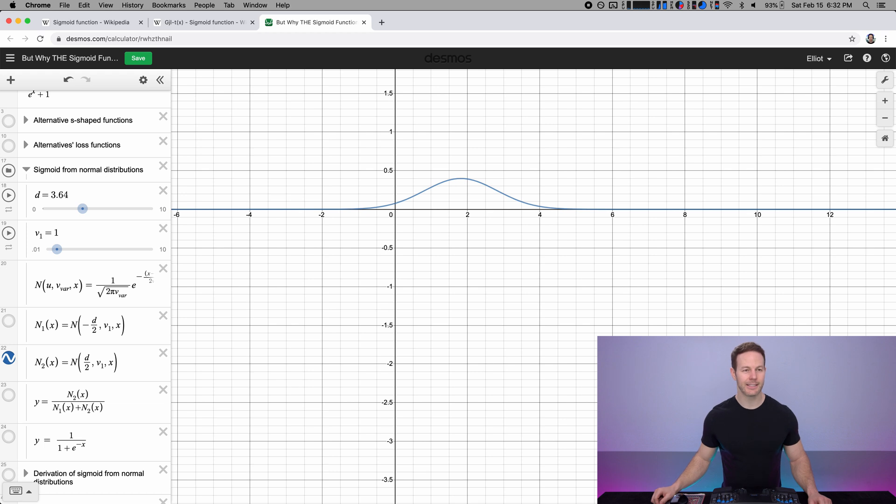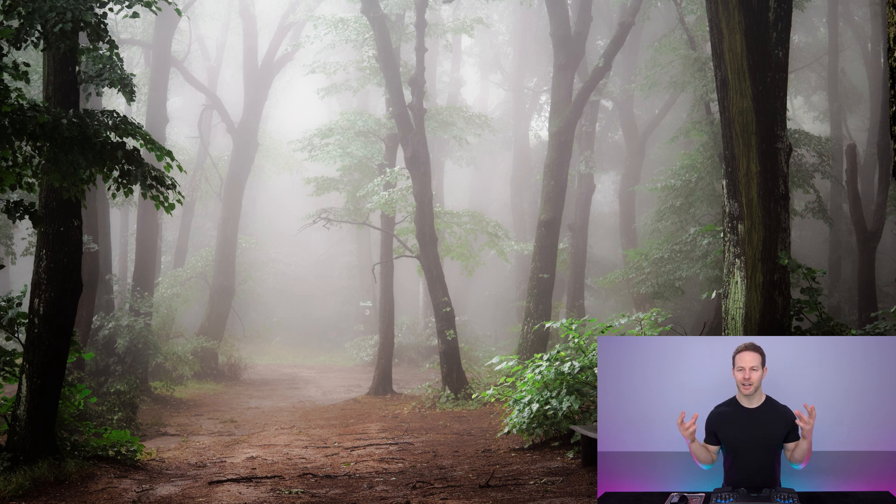But now I want to look at the statistical side. And I'll start by showing you an example of where we see the sigmoid function in nature. So speaking of nature, let's imagine we are out in nature. We're in a forest and it's getting foggy. And the fog is starting to condense on these branches and they're starting to drip.